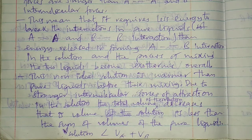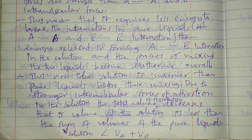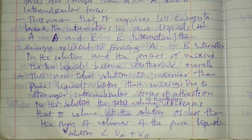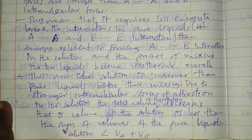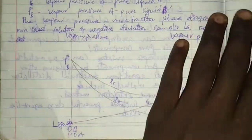This non-ideal solution is warmer than the pure liquids before mixing. Due to stronger intermolecular forces of attraction in the solution, the total volume of the solution decreases - that is, the volume of the solution is less than the sum of the volumes of the pure liquids.